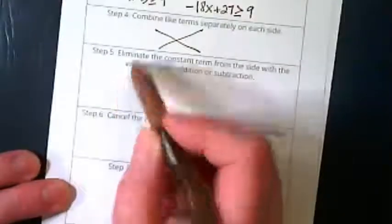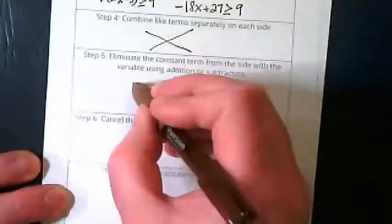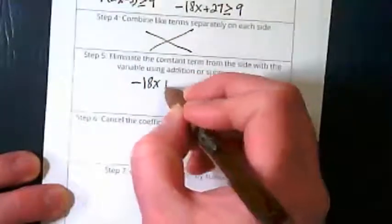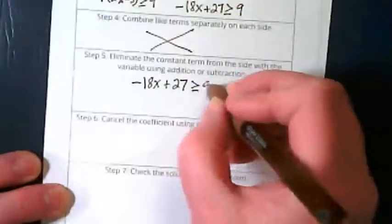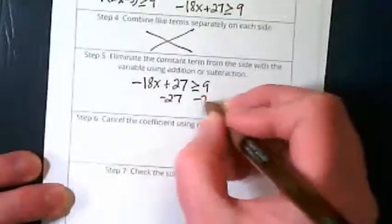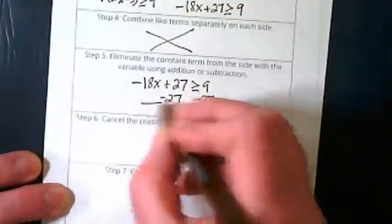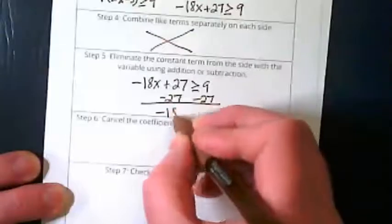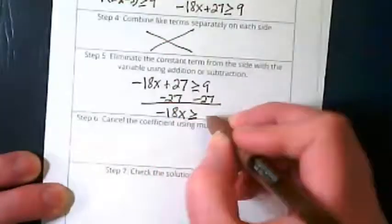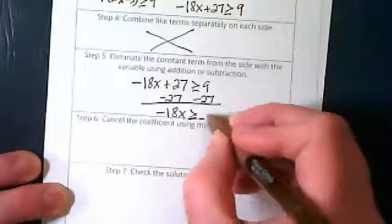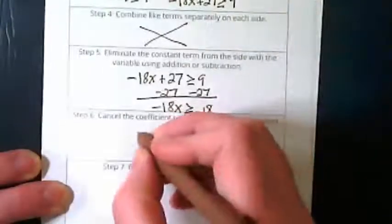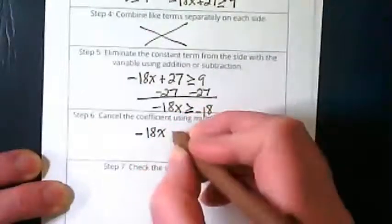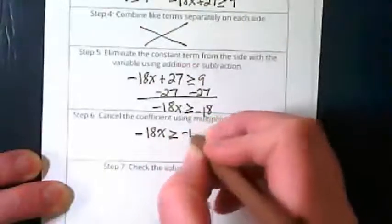Step 5, eliminate the constant that is on the side with the variable. So that constant is going to be this 27, isn't it? That gives me negative 18x is greater than or equal to negative 18.